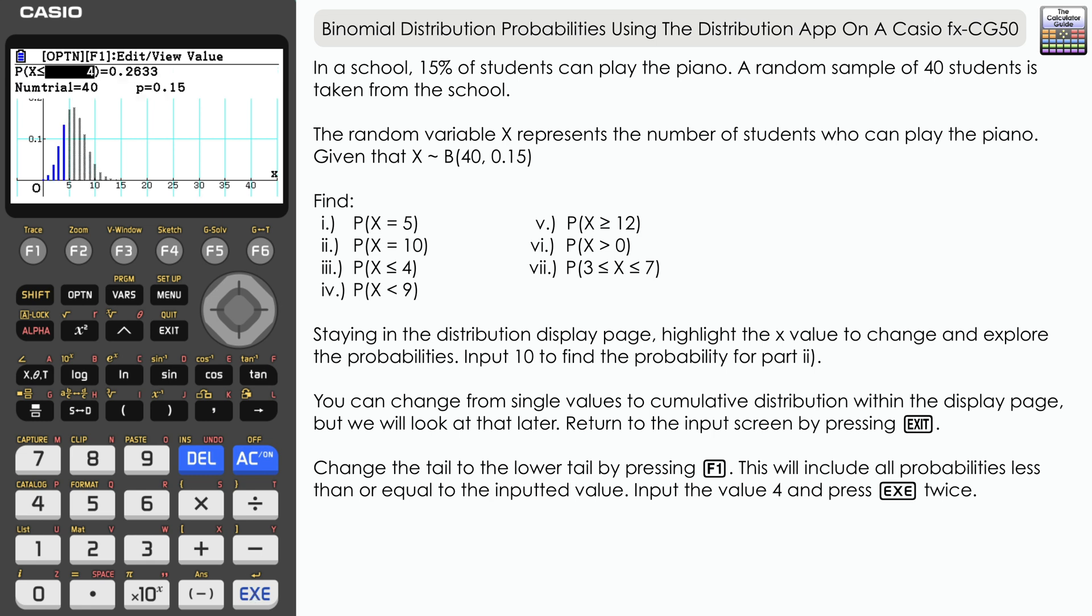And we can see here on the display that we've got the bars for 0, very small, 1, 2, 3, 4 displayed. So we're counting all of the probabilities for those values, and we've got 0.2633 as our answer.